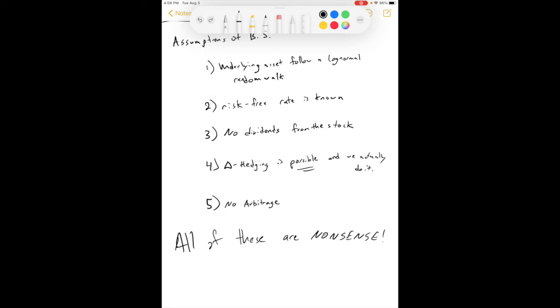Number two, the risk-free rate is known. We tend to approximate the risk-free rate using short-term U.S. government bonds. But, really, we're just kind of making it up. There is no such actual thing as the risk-free rate. No dividends from the stock. This one's actually becoming more true over time. Dividends, for whatever reason, have kind of, I'm going to say, gone out of vogue. They're not as popular. They're not as common as they used to be. We talked about delta hedging being impossible or at least incredibly expensive. So, even if we could delta hedge, we would almost certainly not actually do it.